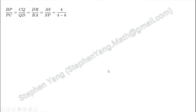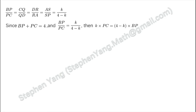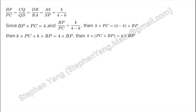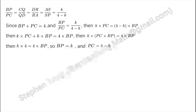We know that BP over PC equals CQ over QD equals DR over RA equals AS over SP, which equals K over (4 minus K). We also know that BP plus PC equals 4, and BP over PC equals K over (4 minus K). Then K times PC equals (4 minus K) times BP, so K times PC plus K times BP equals 4 times BP. Since PC plus BP equals 4, we get K times 4 equals 4 times BP, so BP equals K.